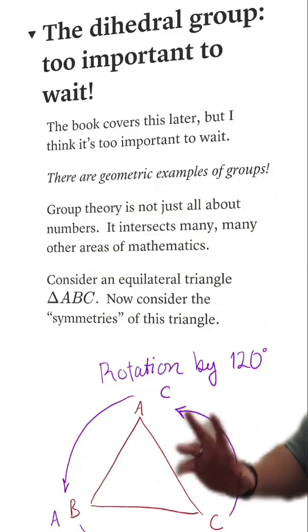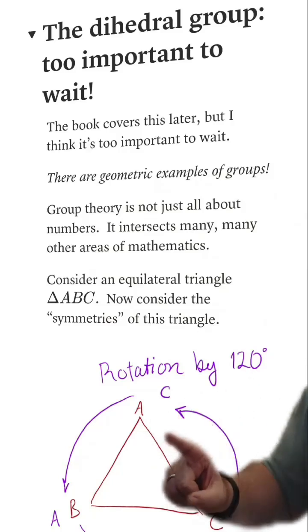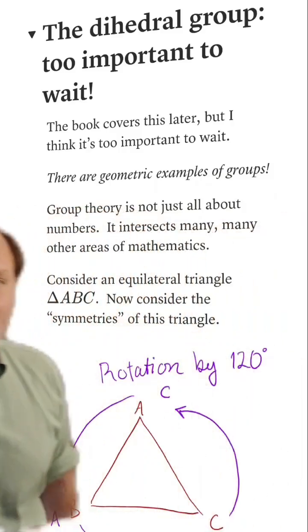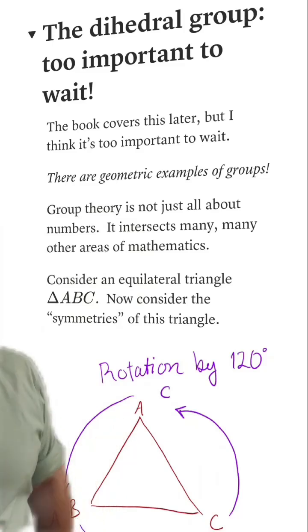As a first example, we could consider rotating by 120 degrees. That'll send vertex A over to vertex B, it'll send vertex B to where C was, and then C over to where A was.